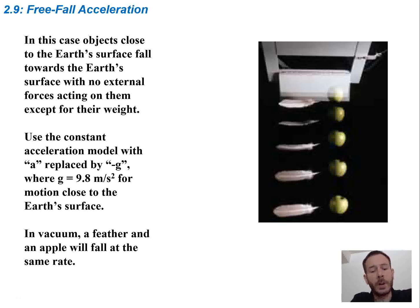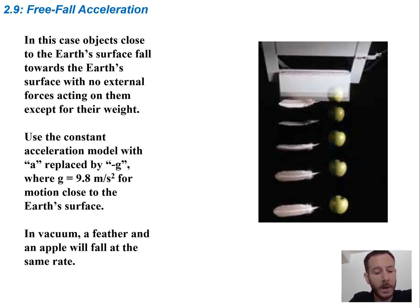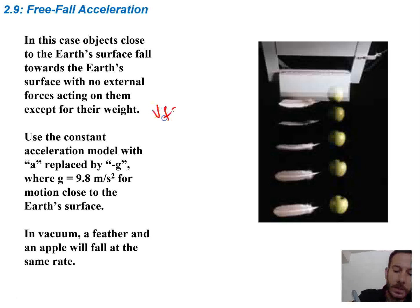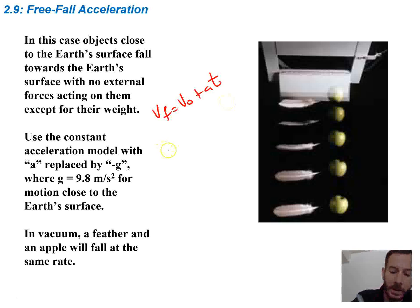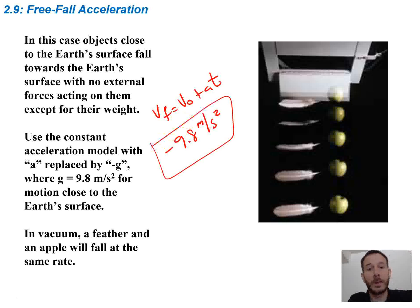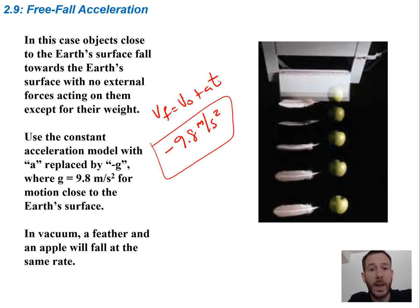In the cases we're talking about, we're dealing with objects that are close to the Earth's surface and have no external forces acting on them except for their weight — so no air resistance or anything like that. We're going to use G for the acceleration model, replacing A with negative G in our kinematic equations. That's negative 9.8 meters per second squared. In a vacuum, a feather and an apple fall at the same rate — all objects fall at the same rate no matter how heavy they are.